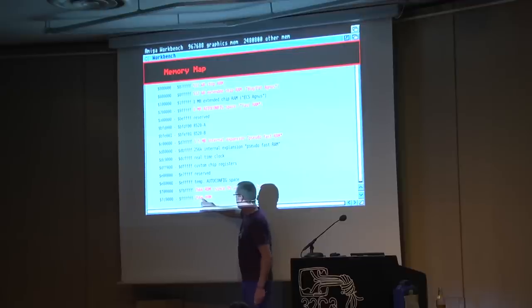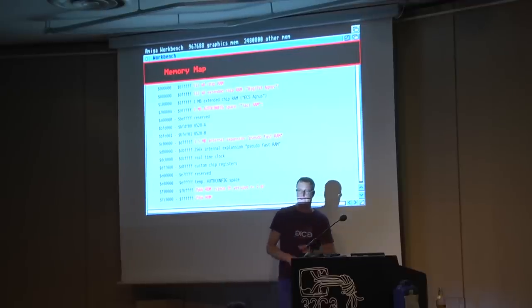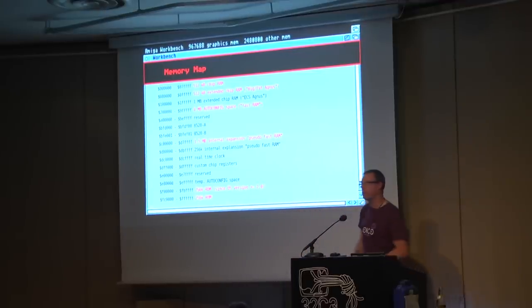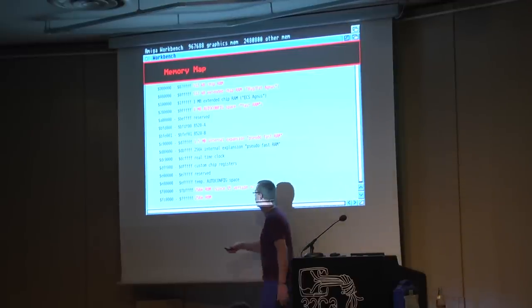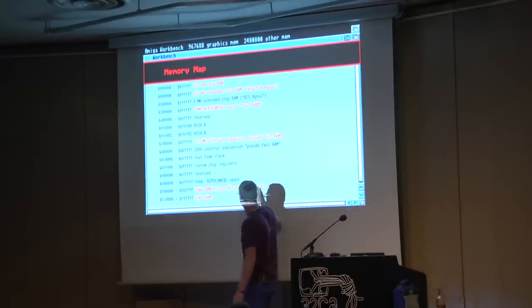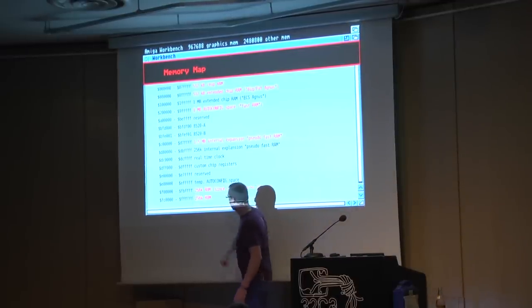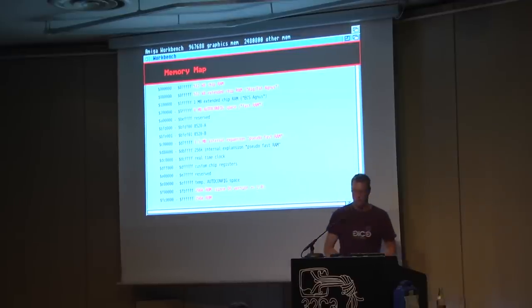At the end of the memory map, we had 256K ROM for version 1 of the operating system. For the newer OS — version 2 and above — there was another 256K, making 512K ROM in total.